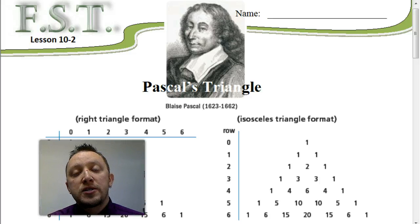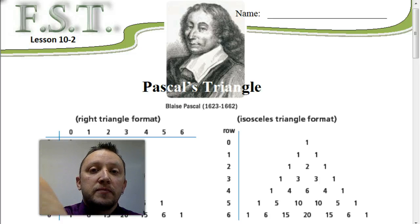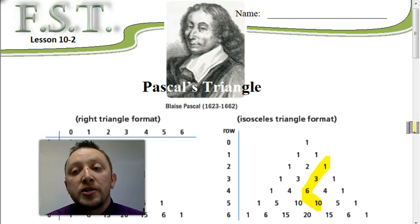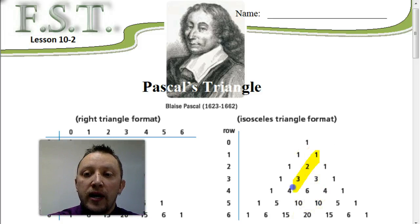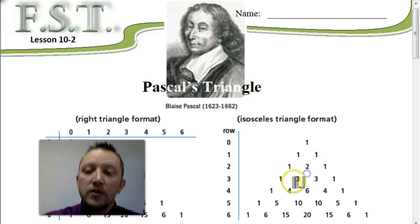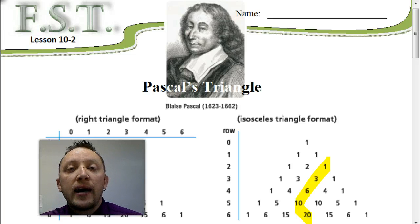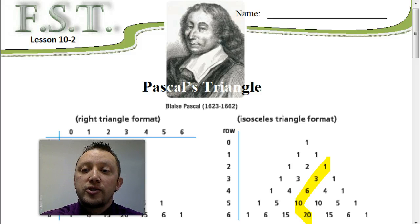We also have what I like to call the hockey stick set of numbers. If I look at those numbers, for example, 1 plus 3 plus 6 is 10. Or if we look at this set of numbers, 1 plus 2 plus 3 plus 4 is also 10. So the sum of a set of numbers, and the end of that hockey stick, gives you that sum. So 1 plus 3 plus 6 plus 10 is 20, and so on.